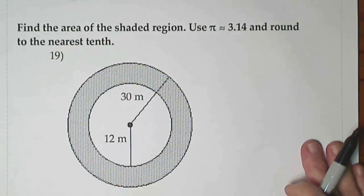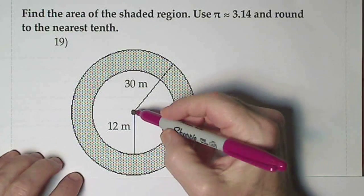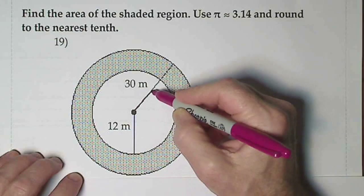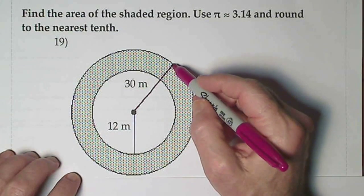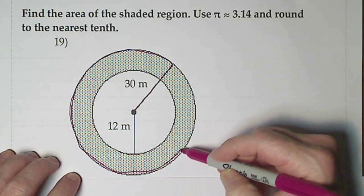Then the last one that we're going to look at, we have to find the area of a shaded region. We don't have a formula to just find an area of part of a circle, so we're going to have to do this in two steps. First we'll have to find the area of one of the circles and then the other. So let's go ahead and start out with the bigger one. This is the radius of the big circle is 30.